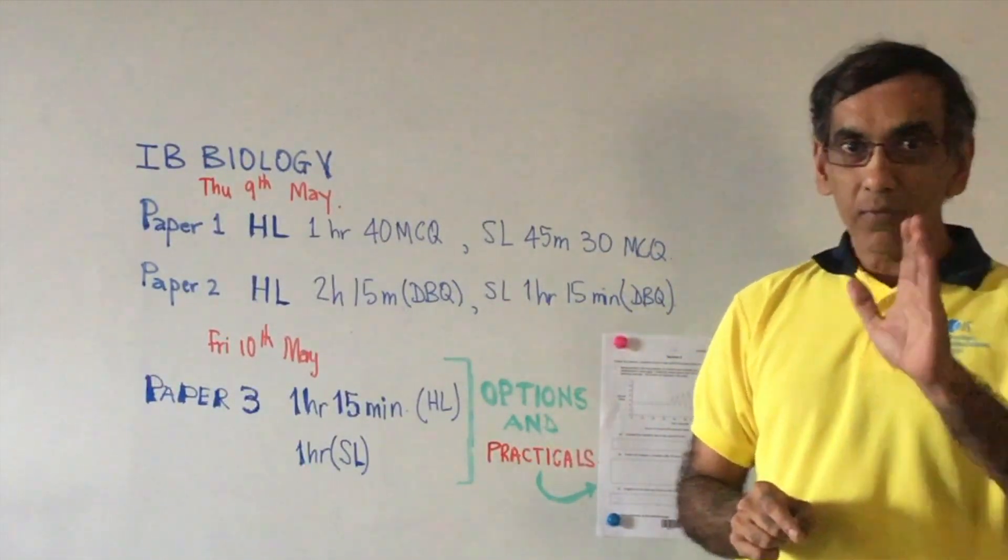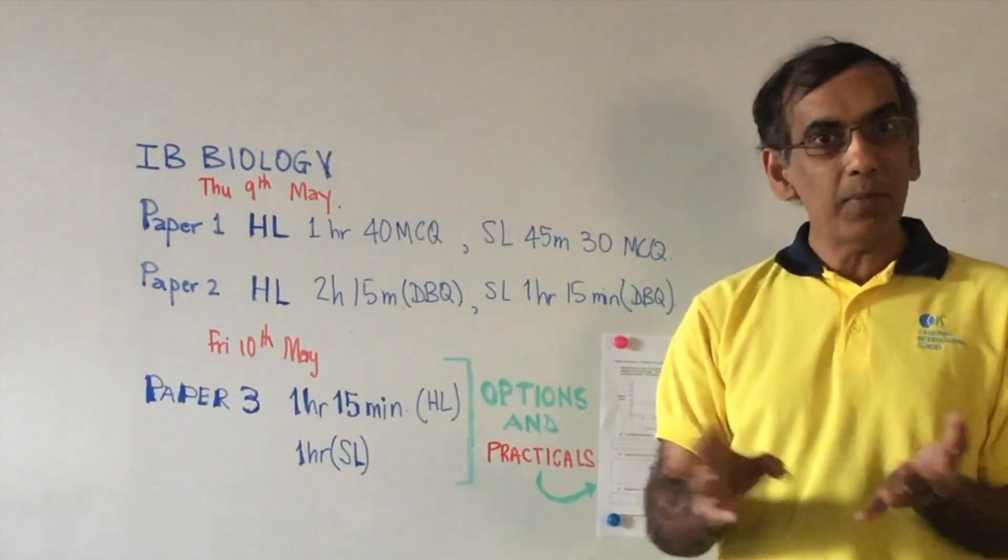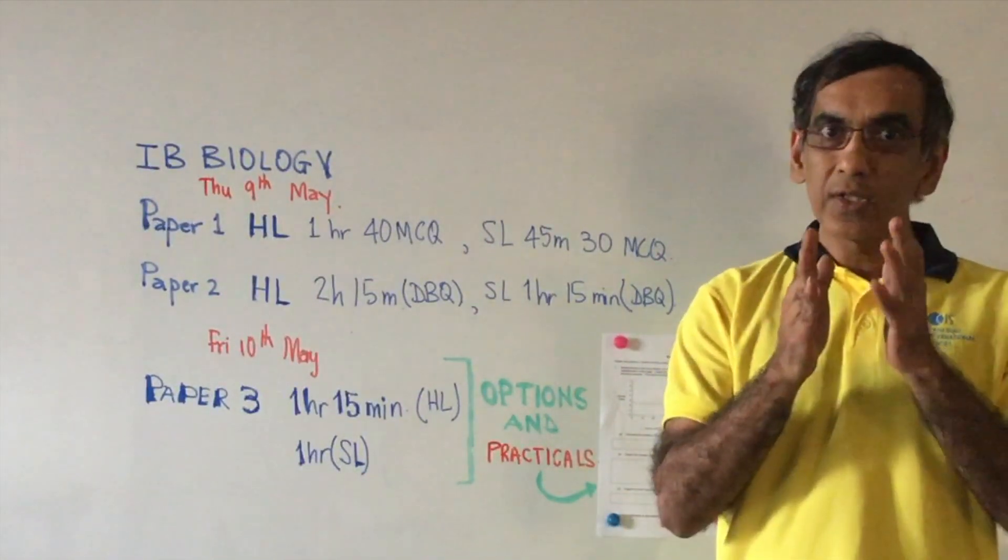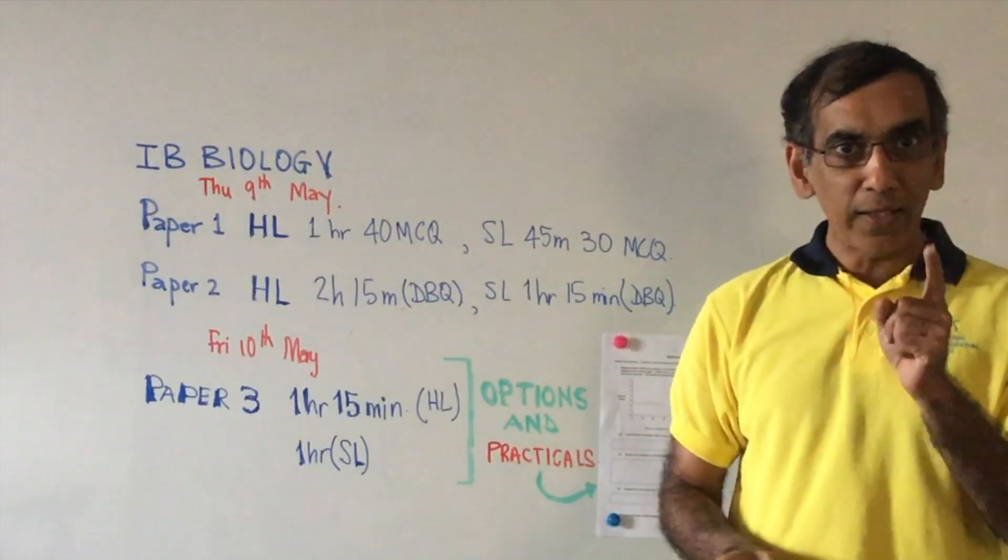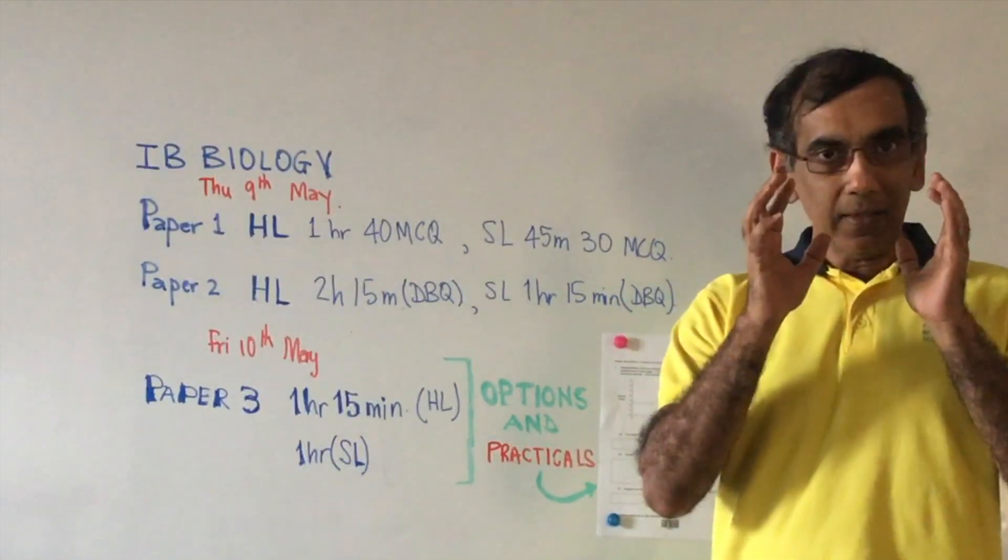Paper 3 has one option to study for, whether it's A, B, C, or D. You can study thoroughly for that option in one night because it's a set list of topics and you're going to get questions only on those topics.